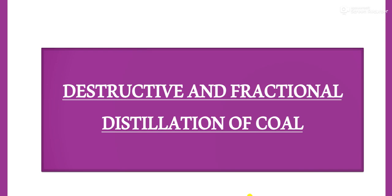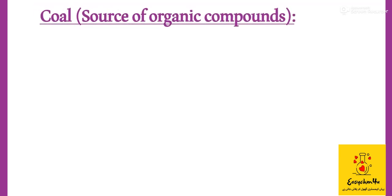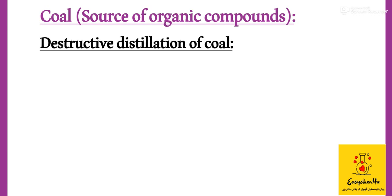Bismillahir Rahmanir Raheem. Assalamu alaikum students. Today the topic that we are going to discuss is destructive and fractional distillation of coal. Let's see why we are discussing this topic. As we know that coal is the source of organic compounds and it is naturally present in our environment. It is further the source of hundreds of useful organic compounds. So how will we get those useful organic compounds from coal? The two processes are destructive distillation and fractional distillation. Let's discuss the destructive distillation of coal first.